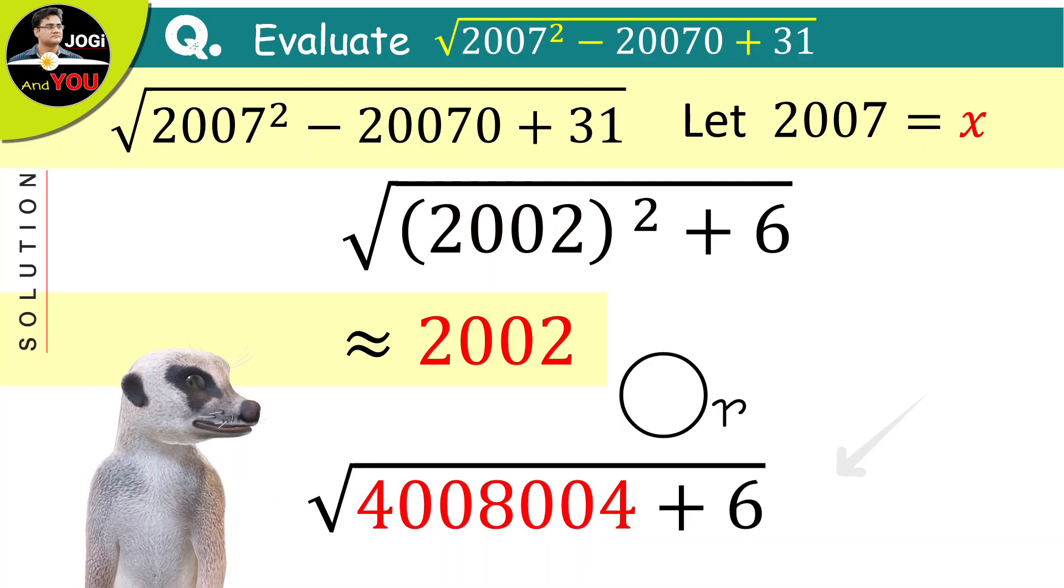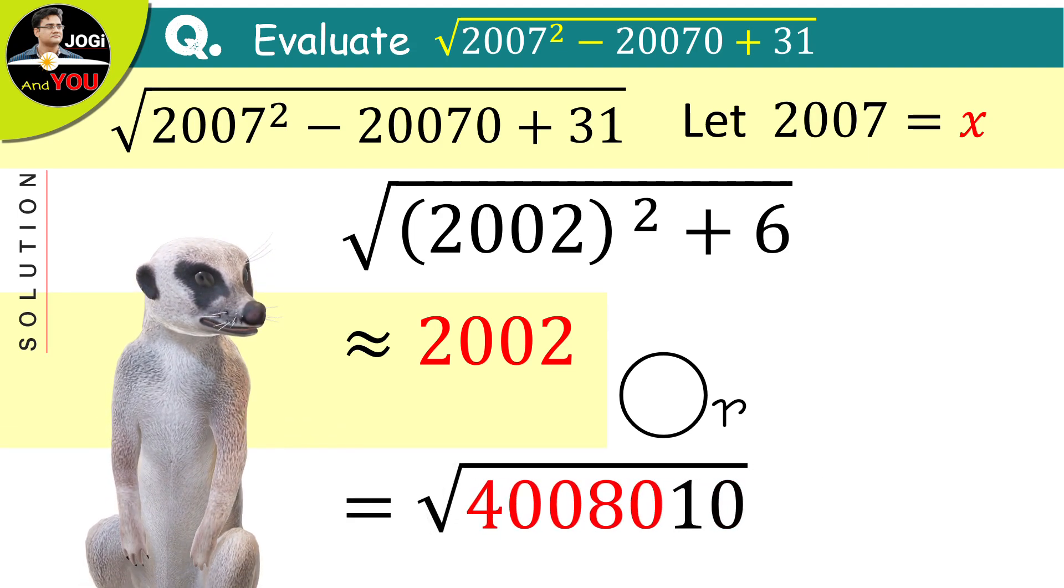So, and after that, we will add 6 to this which is 4008010. And after taking the square root of this, its value will be nearly 2002 decimal 0014985.